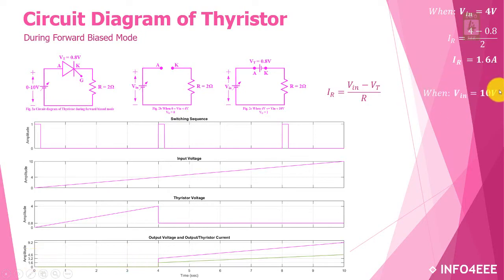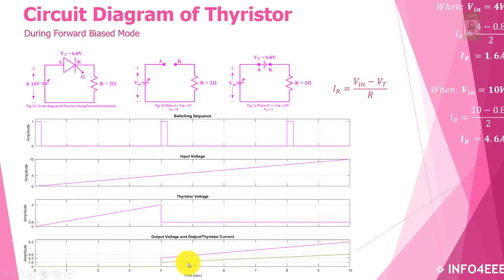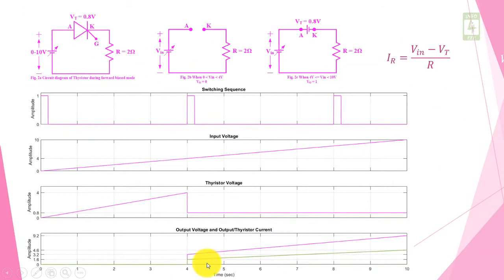When input voltage is 10V, IR will be (10 − 0.8) / 2 = 4.6A. So at this instant IR is 4.6A and the voltage drop across the resistance will be 9.2V. This is the characteristics for load current across resistance R, and this is the characteristics for the load voltage across R.